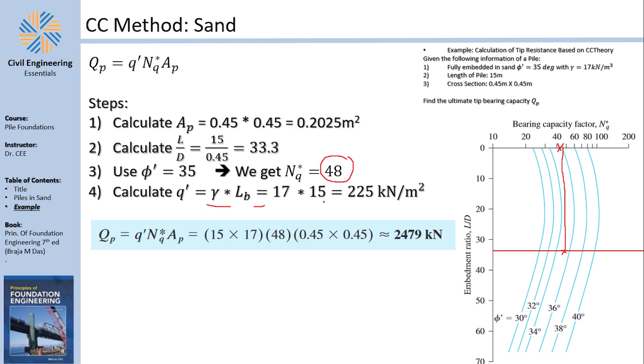48 is the NQ. Now we need Q. It's gamma times LB. So I have everything you need. From it, you can find QP, which is something very easy.